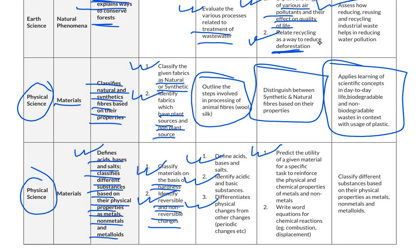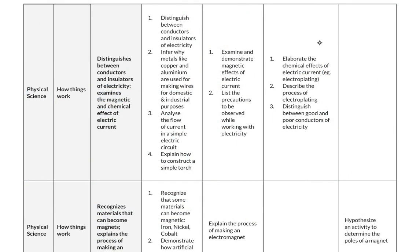For proficient level, students predict the utility of a given material for a specific task and write word equations for chemical reactions. For advanced level, students classify different substances based on their physical properties as metals, non-metals and metalloids. The next topic is how things work.